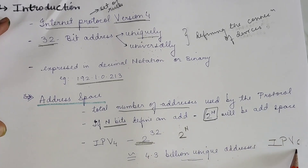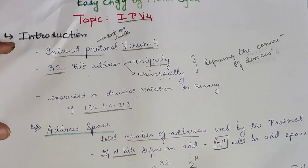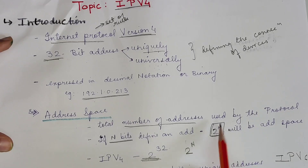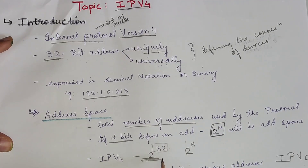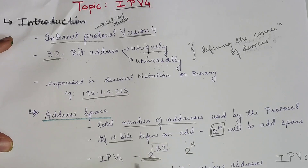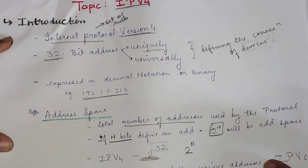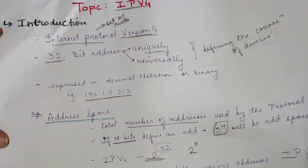We will also see what IPv6 is in the next video. For now, simply remember that address space equals 2 raised to n, where n is the number of bits. For IPv4, it is 2 raised to 32, which is almost 4 billion addresses.